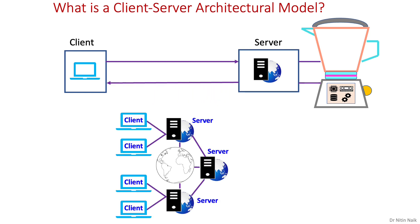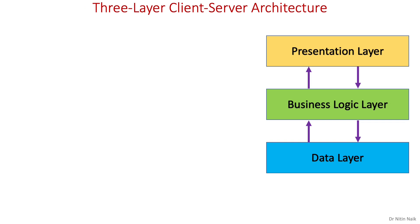The client-server distributed system is represented by a diagram where several servers are connected with each other in order to provide important functionalities of a distributed system. Now we are going to discuss two important terms in the client-server architecture — layer and tier — and try to clarify any confusion between the two. For this, we will study three-layer and three-tier client-server architectures.